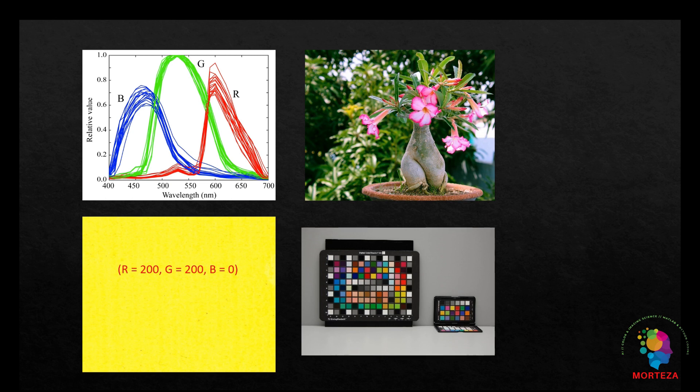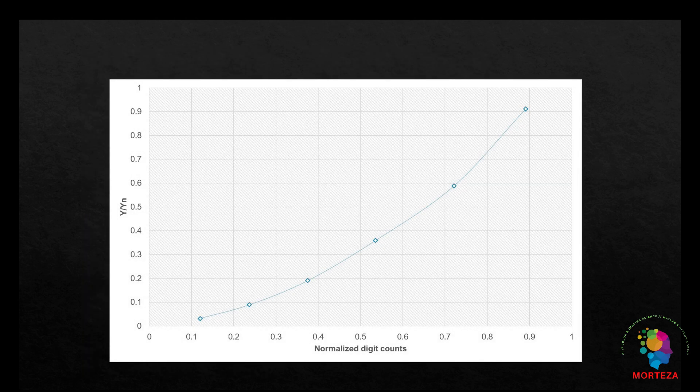The colorimetric characterization goes through a few stages. The first is to linearize the camera's photometric response so that it is linearly related to CIE XYZ tristimulus values. To do that, a transfer function is derived by fitting a relationship between the luminance factor and normalized digital counts of the neutral samples of the color chart. Luminance factor refers to Y over Y_n, where Y is the CIE tristimulus value of the neutral samples and Y_n is that of the perfect reflecting diffuser. Normalized digital counts refers to digital counts divided by 255 for an 8-bit per channel system.